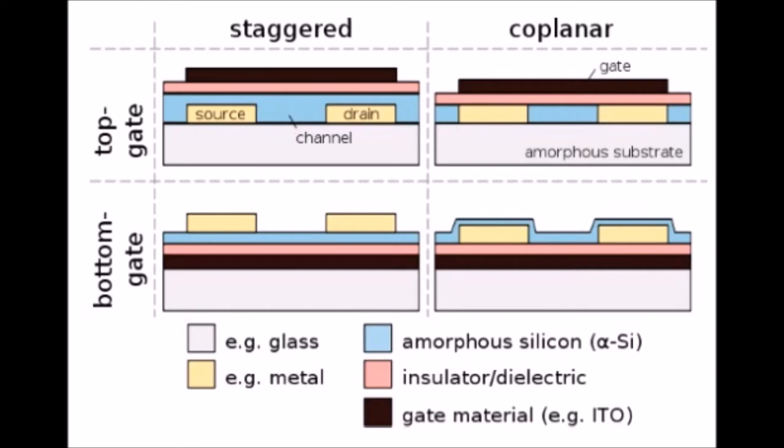For example, staggered structure using bottom gate are usually whenever the dielectric sheet needs higher temperature, whereas the coplanar top gate structures are frequent for higher temperature semiconductors, for example, polysilicon.